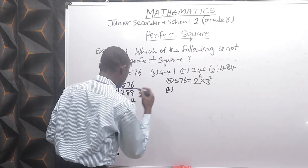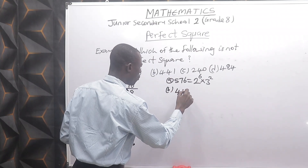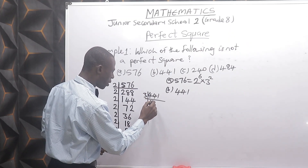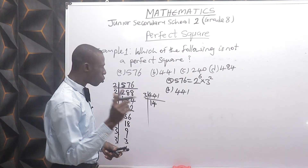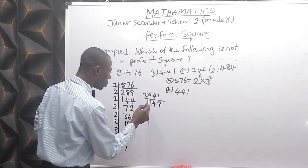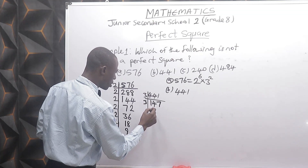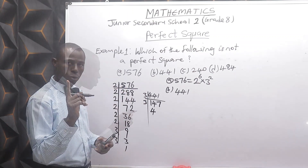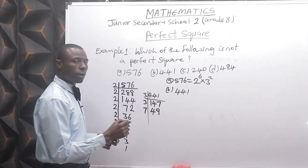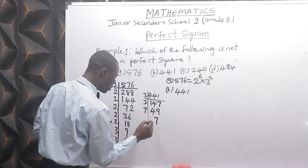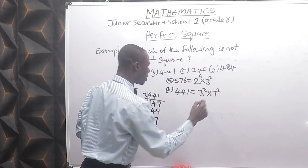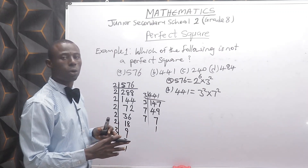For option B, 441 — factoring gives 3 raised to power 2 times 7 raised to power 2. You can see that 441 is also a perfect square, since both factors carry even powers.